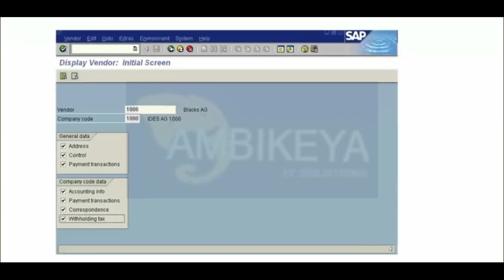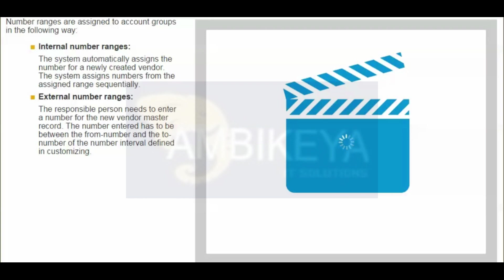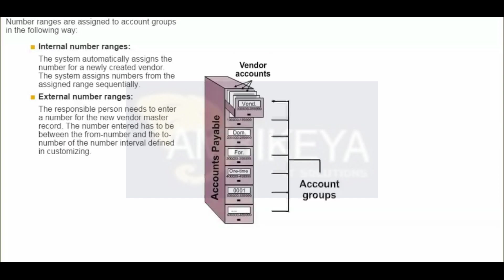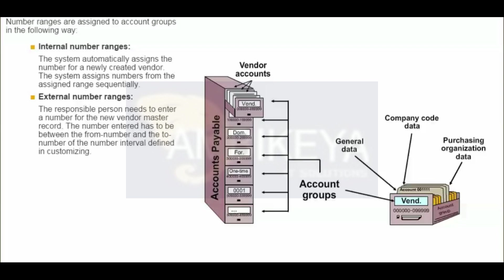This slide shows the initial screen to display a vendor master record. Vendor accounts can be divided into various account groups in the same way as GL accounts — they can be organized and managed more easily. The account group controls the screen layout of all areas of the vendor master record, not just the company code data as is the case with GL account groups. Note: the accounts in an account group usually have similar characteristics.